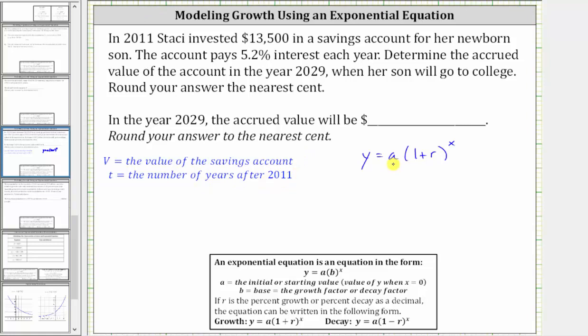A is the initial or starting value, and therefore a is equal to 13,500. And r, the percent of growth each year, is 5.2%, which must be expressed as a decimal for the equation. 5.2% is equal to 0.052 as a decimal.